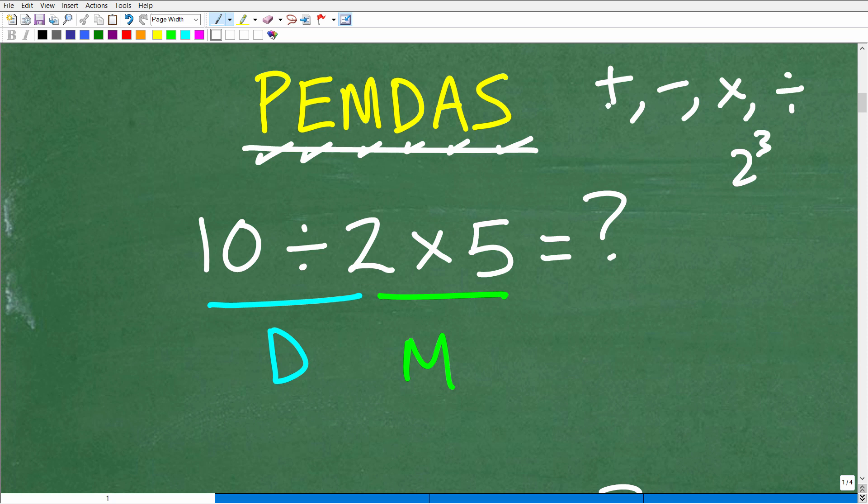So when we have a problem that involves adding, subtracting, multiplication, division, powers, that's all together, like, what do we do first? Because the order you do these operations in can totally change the final answer. So we need a checklist. We need to say do this first, do this second, do this third, et cetera, et cetera. And that's what this little acronym right here stands for.